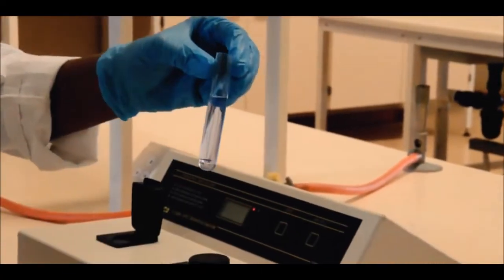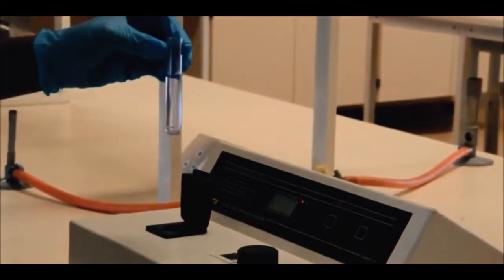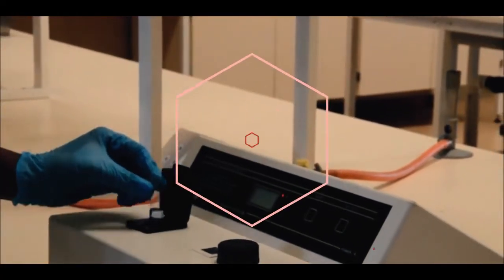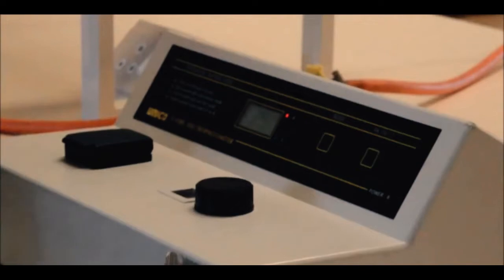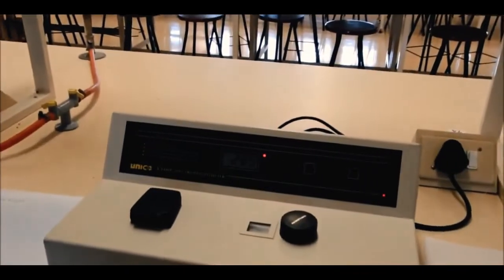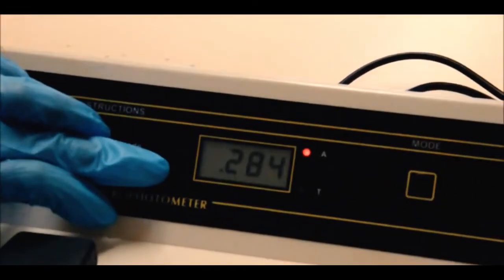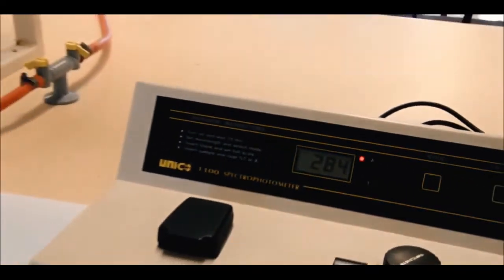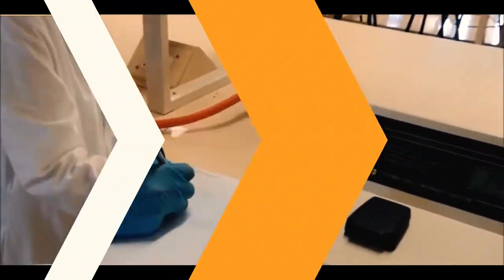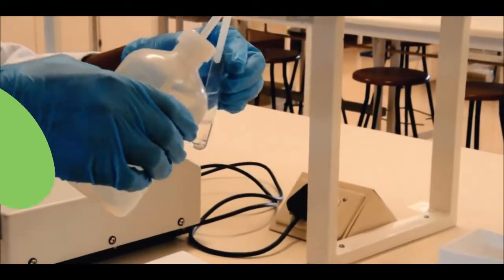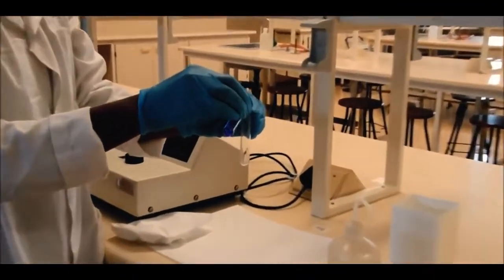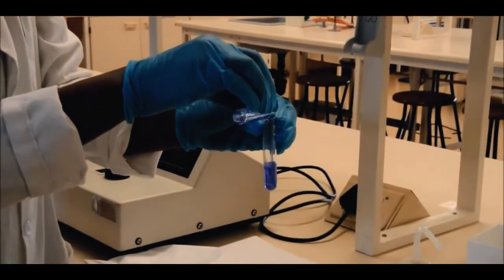The absorbency reading is allowed to stabilize and is recorded in a lab book. This cuvette is then removed and emptied, where after the cuvette is once again rinsed with distilled water. The content of the next tube is then carefully transferred to the cuvette.